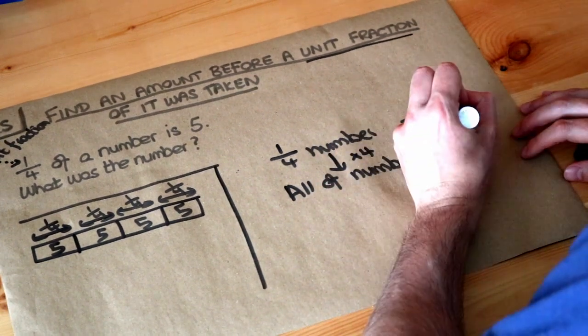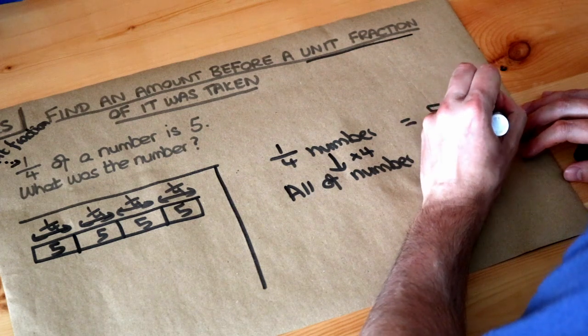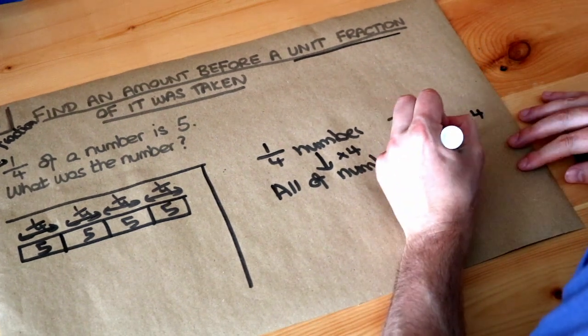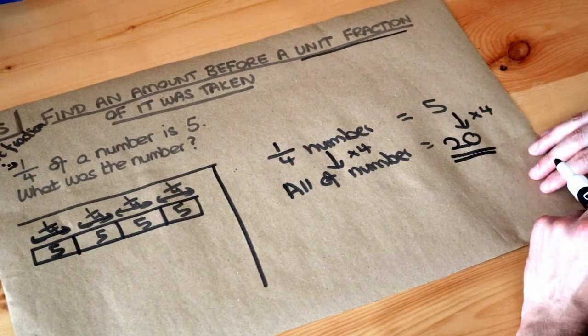And therefore if we're timesing this by 4, we also have to times this number here by 4. 5 times 4 is 20. So the original number was 20.